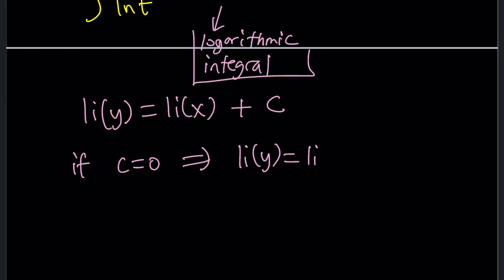Obviously, if c is 0, we get the simple case, which is li of y equals li of x. By the way, li is logarithmic integral. That's short for that. This implies y equals x, doesn't it? Right? Obviously, it should. But if c does not equal 0, Houston, we have a problem.